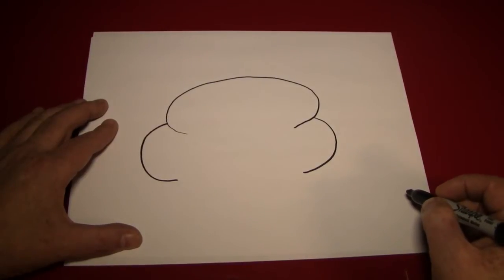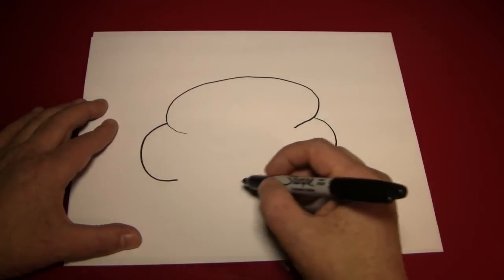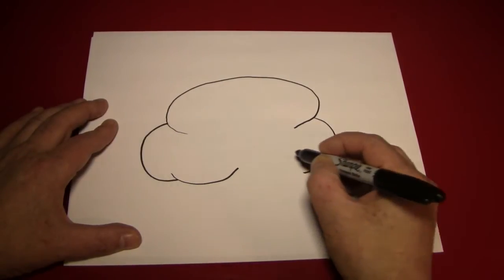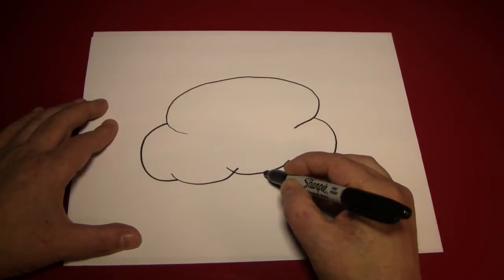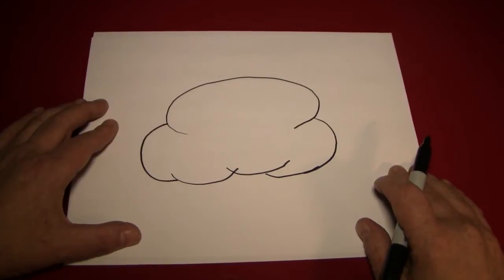Now all we have to do is connect these two lines with little curves on the bottom like so. One little curve, two little curves, three little curves. However it works out for you.